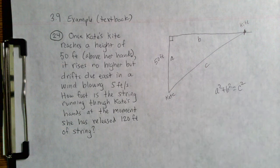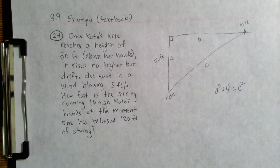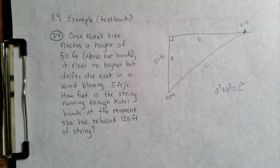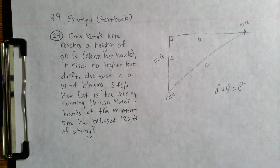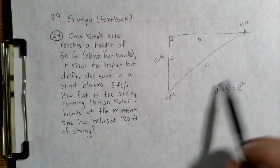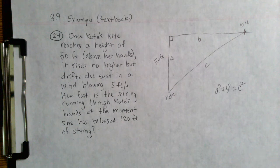In any related rates problem, you need an equation that tells you how the variables are related — here it's the Pythagorean theorem. The problem typically won't give you the equation directly, but it will give you enough information to know what shape you're working with and what equation to use. When I take the derivative of both sides, the important thing — very similar to implicit differentiation in the previous section — is that we're treating each variable as a function of time.